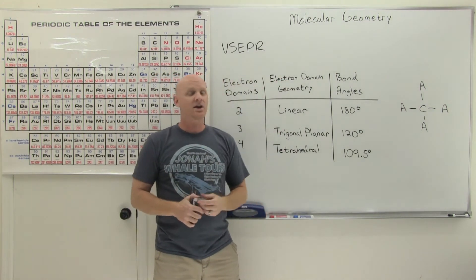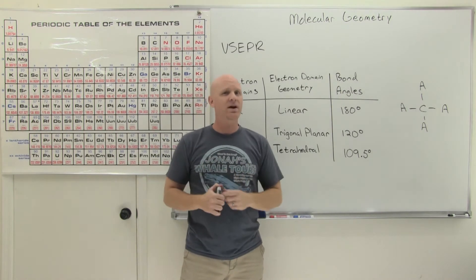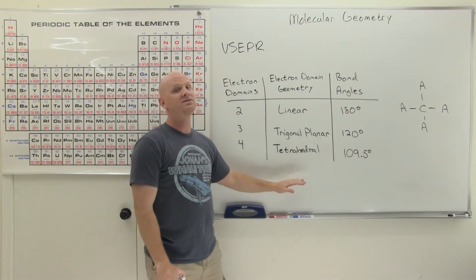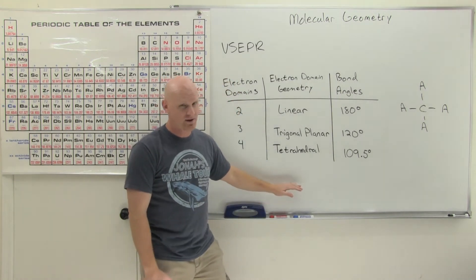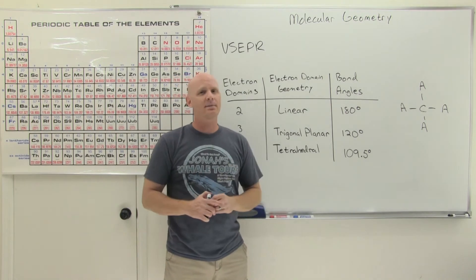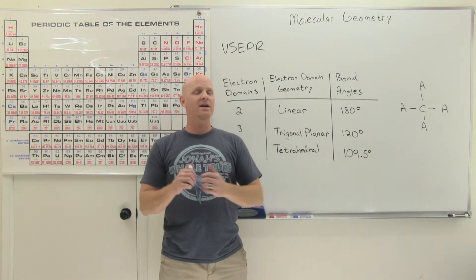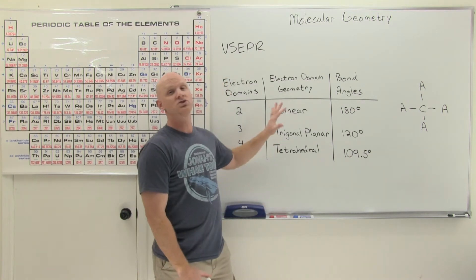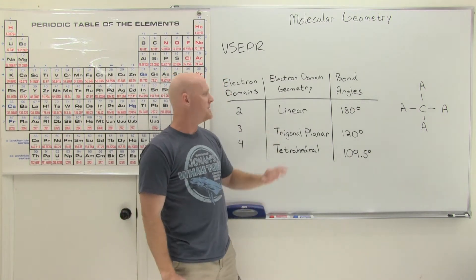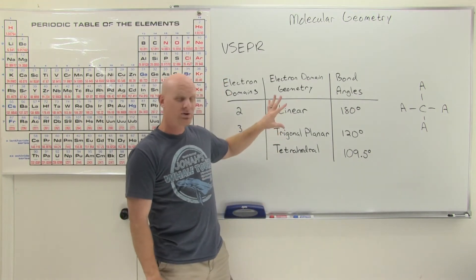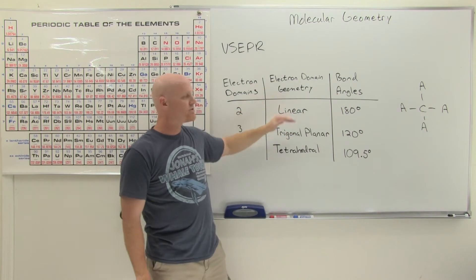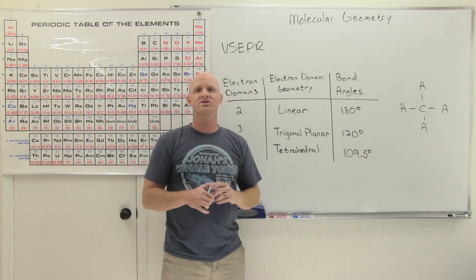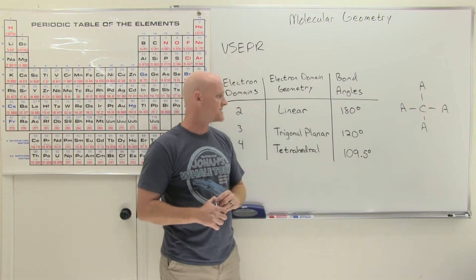When you take a college or AP high school chemistry course, you'll learn about five and six electron domains. A typical high school class only covers two, three, or four electron domains, so that's what we'll restrict ourselves to in this lesson.